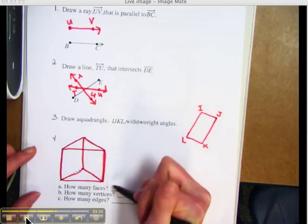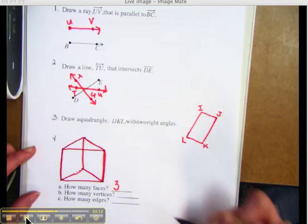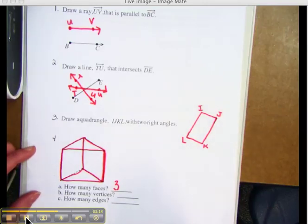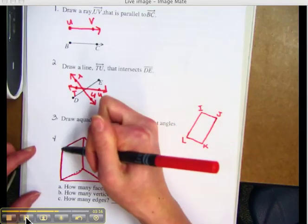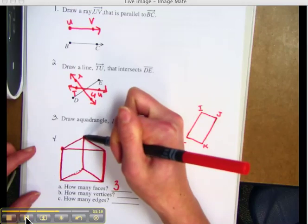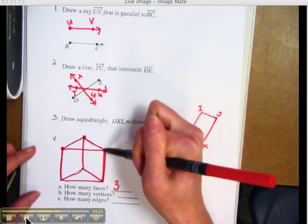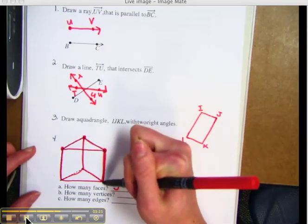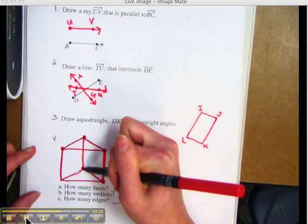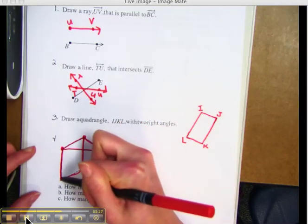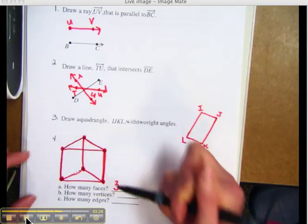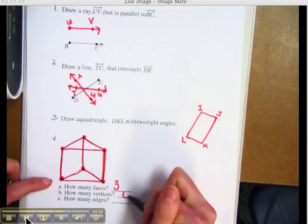How many vertices. Here's one vertices. Two, three, four, five, six. Notice the six vertices.